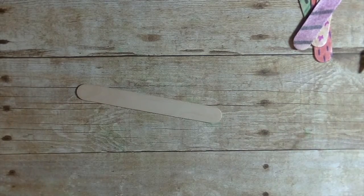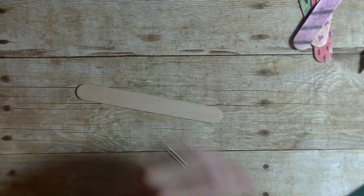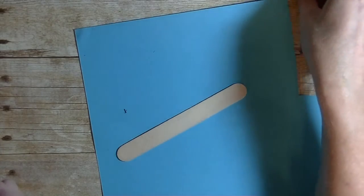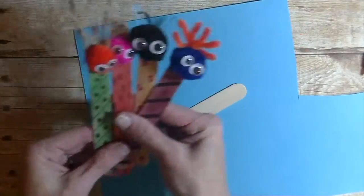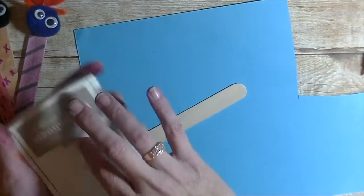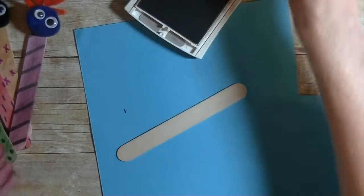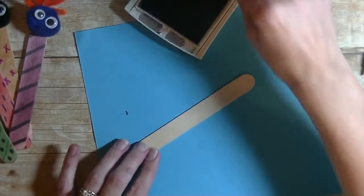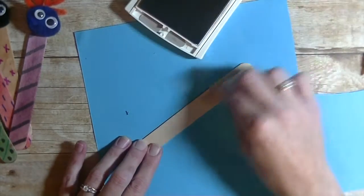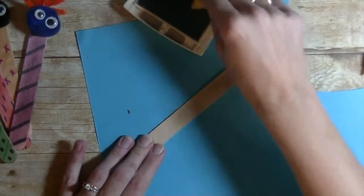Alright, so to get started I have a regular popsicle stick, a large one, and bring in a piece of paper. Now I chose to go ahead and use ink to color these but the little ones can use markers or crayons or paint.